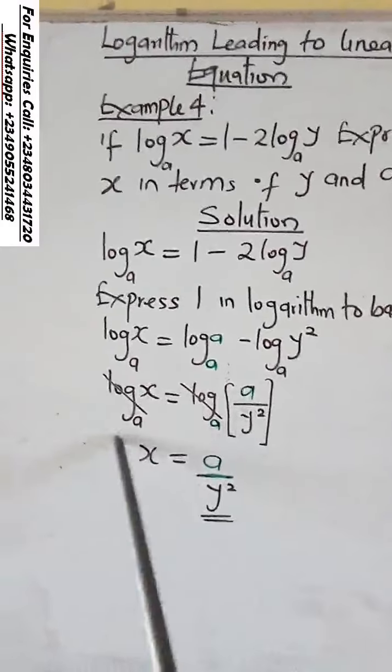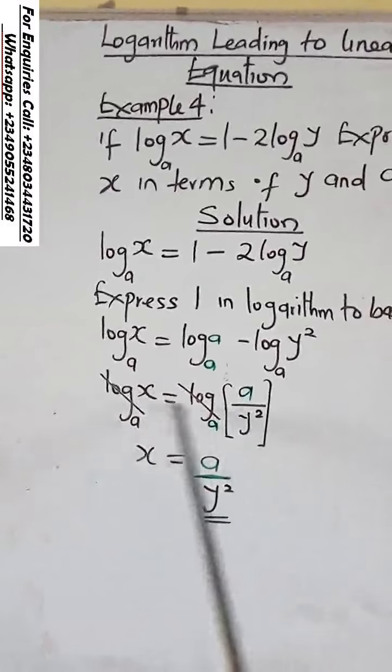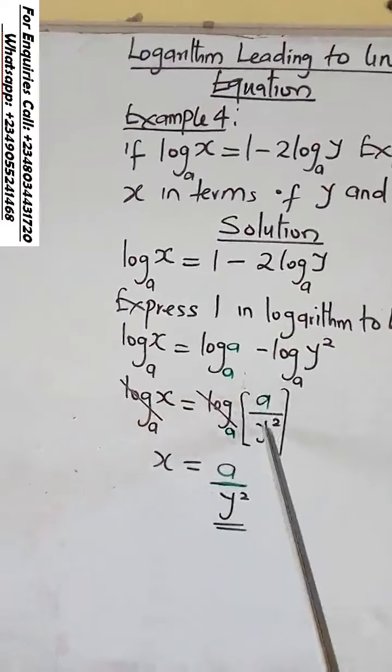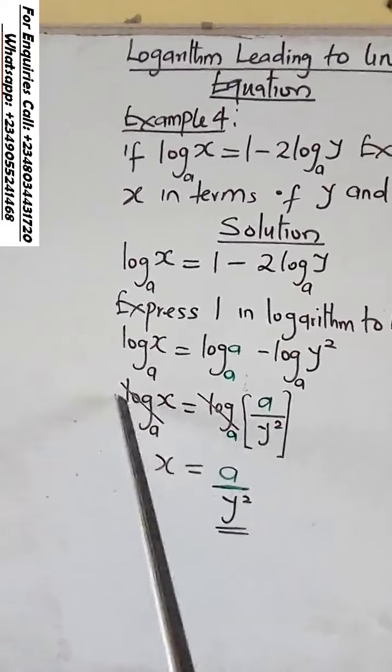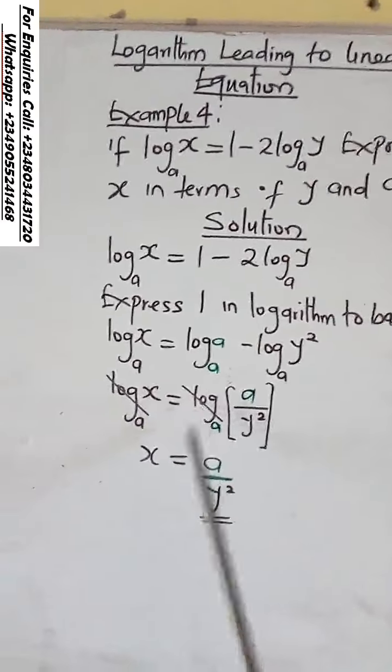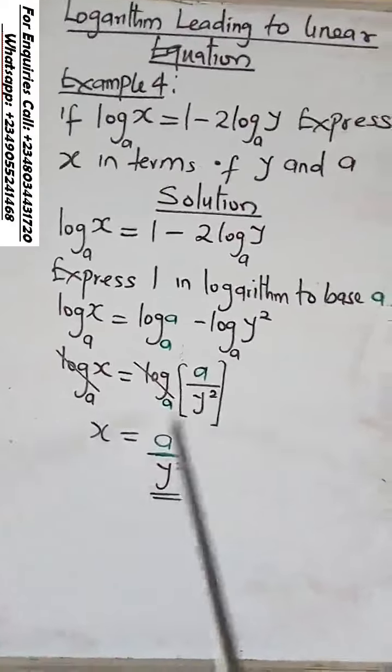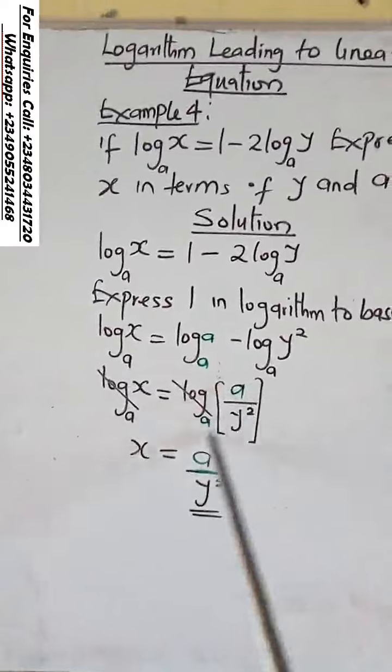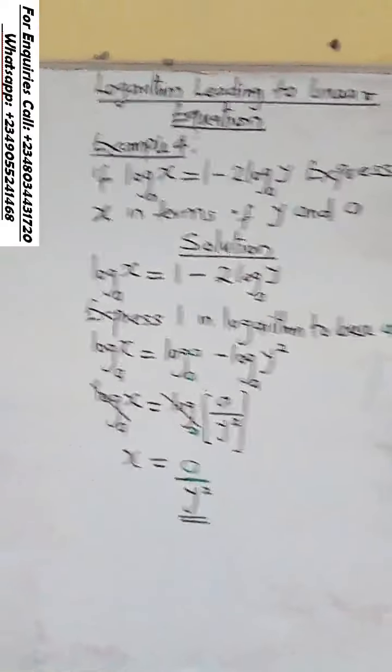Now if you look at the two sides of the equation, you have log X base A here, log A over Y square base A. So the two logs will go. This log will cancel this log. So what you now have is X equals A over Y square.